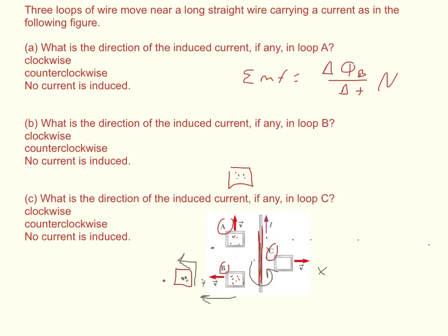Now C has current going into the loop, and as it travels this way it will have less and less current going into the loop. Or I'm saying current, it will have less and less magnetic field going into the loop. So it will have an induced current that causes more magnetic field to go into the center of the loop.